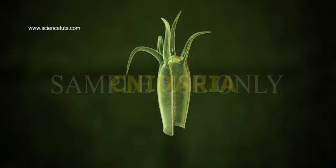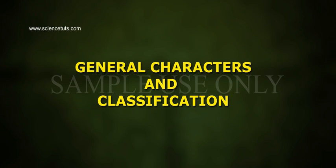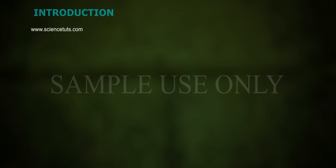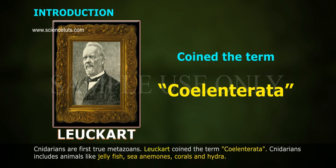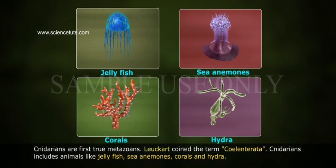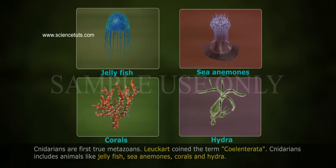Cnidaria General Characters and Classification Introduction. Cnidarians are the first true Metazoans. Leucard coined the term Coelentrata. Cnidarians include animals like jellyfish, sea anemones, corals, and hydroids.